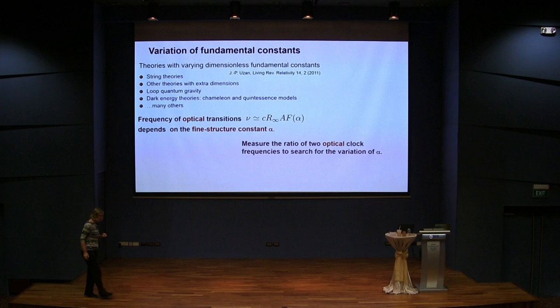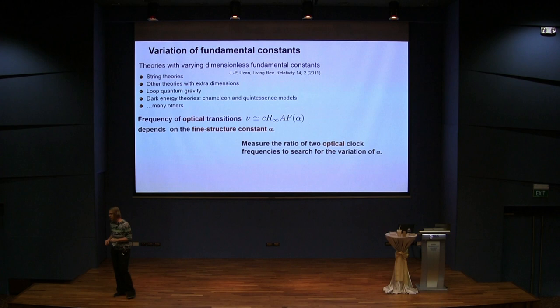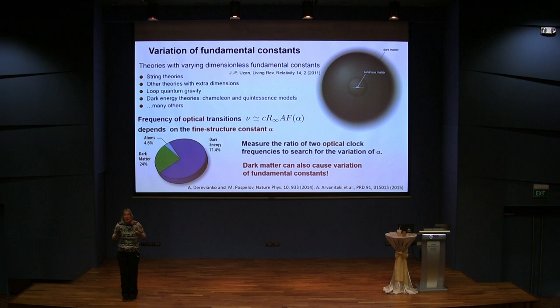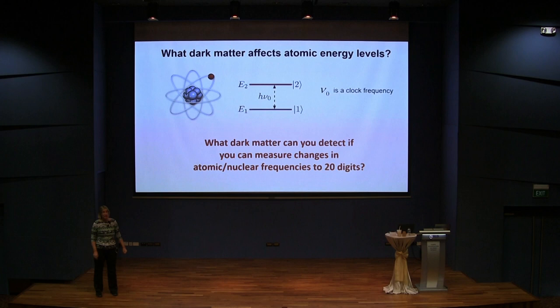This would have been the story five years ago — changing fundamental constants, very nice. The game changed when it was realized that dark matter can actually change fundamental constants, and then everything became so much more interesting, because now my clock is my dark matter detector. In fact, the GPS is a dark matter detection sensor — a very expensive one. So how would this work? First let's pose our questions: which kind of dark matter will affect the energy level, and what can I detect if I can do it to 20 significant figures?